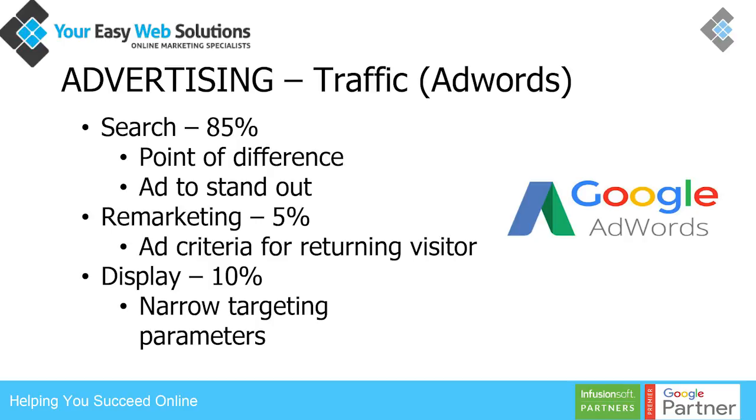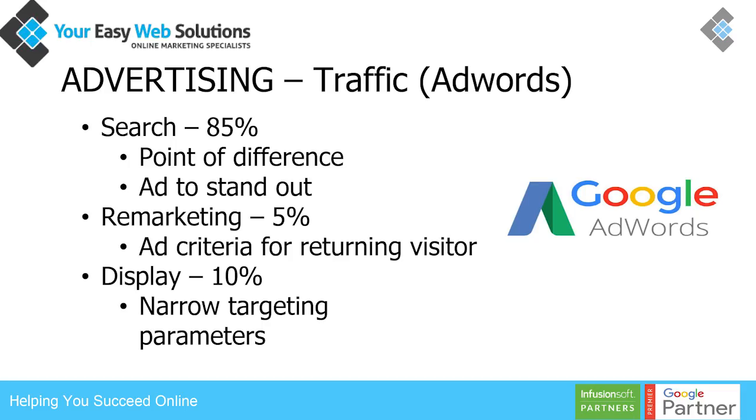So advertising — let's talk about Google AdWords. People struggle to identify the networks in terms of reaching people. For general service-based businesses that have been around two or more years with proof of concept, the way I would normally split the budget is to delegate about 85% to search, because it really makes your point of difference stand out and it actually requires someone to take action. Someone types something into Google and when they see your point of difference, it's more like a response.